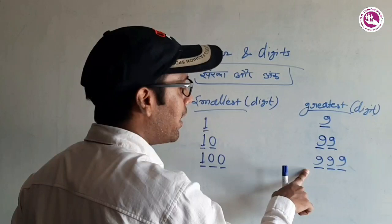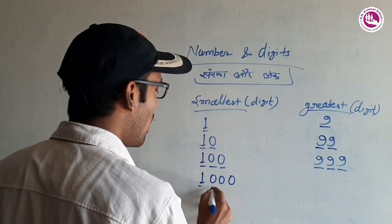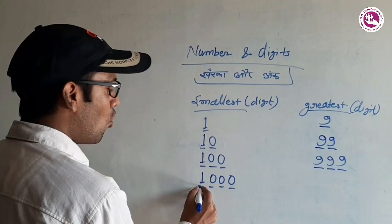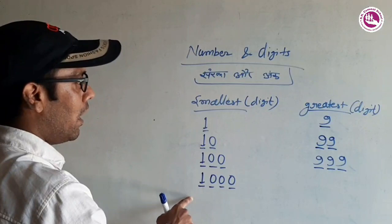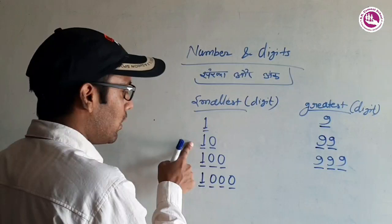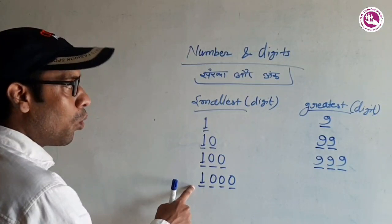One-digit ka greatest number nine; two-digit greatest number 99; three-digit ka greatest number 999. Four-digit smallest number is one thousand — 1000, which has four digits: one, two, three, four. Sabse chhota number — four-digit ka. Char ankon ki sabse chhoti sankhya ek; do ankon ki sabse chhoti sankhya 10; teen ankon ki 100; char ankon ki 1,000.